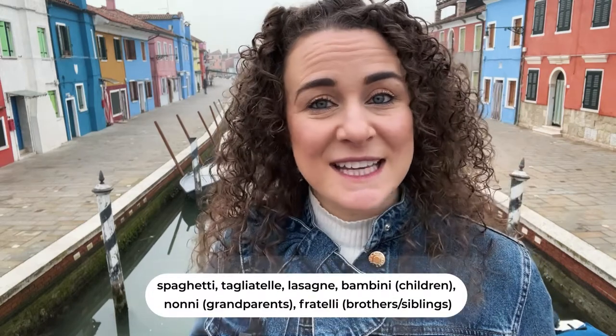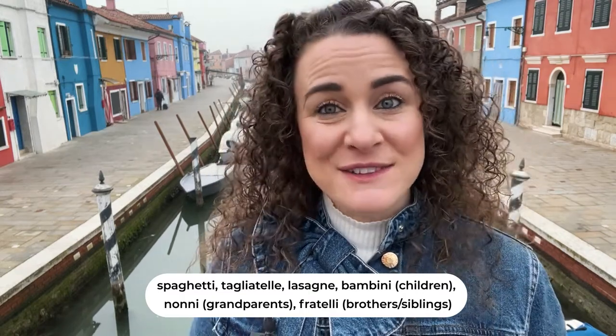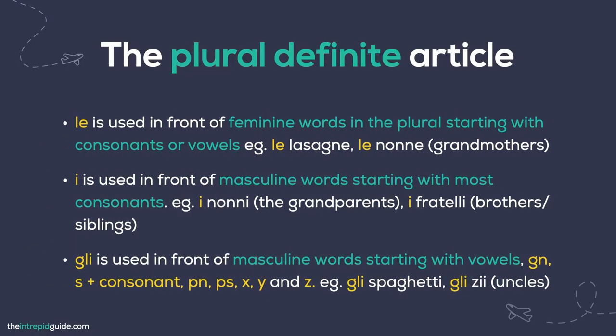The plural definite article. Let's look at nouns in plural form, such as spaghetti, tagliatelle, lasagne, but also bambini (children), nonni (grandparents), and fratelli (brothers or siblings). 'Le' is used in front of feminine plural words starting with consonants or vowels — for example, 'le lasagne,' 'le nonne' (grandmothers). 'I' is used in front of masculine words starting with most consonants — for example, 'i nonni' (the grandparents), 'i fratelli' (brothers or siblings). 'Gli' is used in front of masculine words starting with vowels, gn, s plus a consonant, pn, ps, x, y, and z — for example, 'gli spaghetti,' 'gli zii' (uncles).